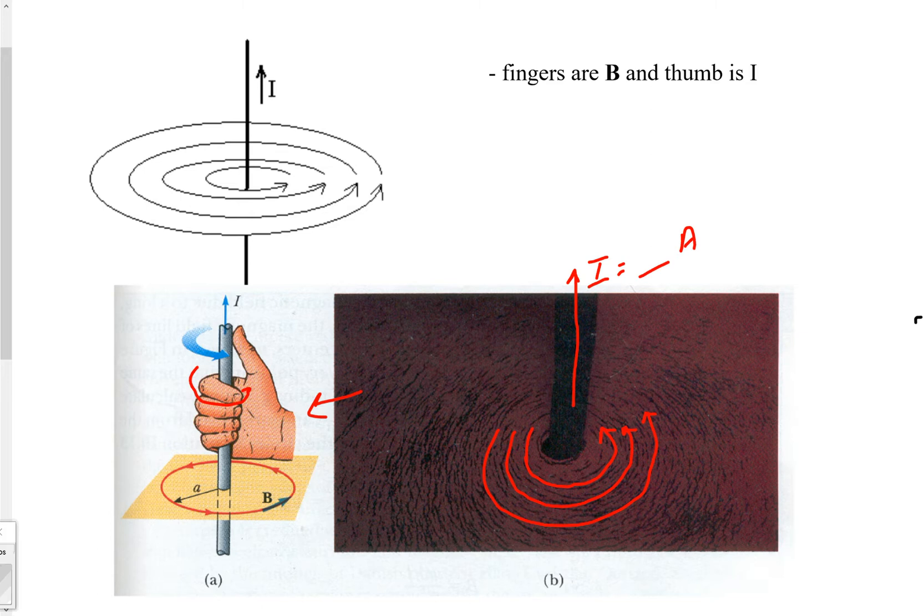So in the case of like this example, your fingers are going counterclockwise. So you've got a counterclockwise magnetic field in the problem. So that's this.